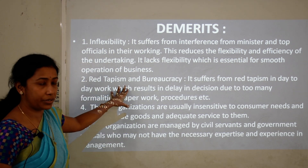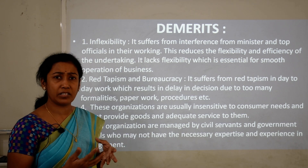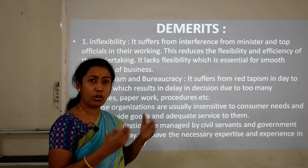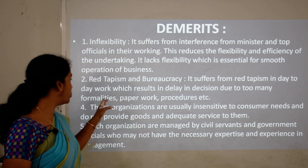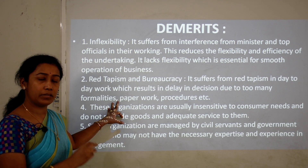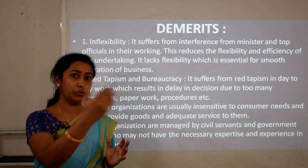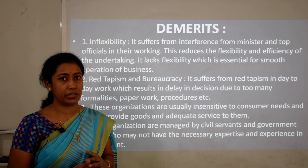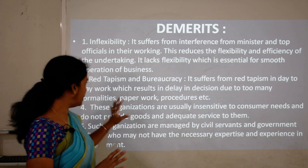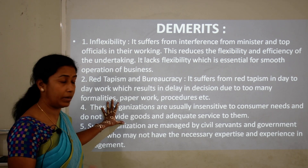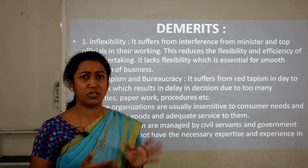Second, red tapism and bureaucracy — they suffer from red tapism in day-to-day work, resulting in delays and corruption. Decisions are delayed due to too many legal formalities. They must provide all evidence and proof of their activities to top management officials, requiring a lot of paperwork and procedures to complete.